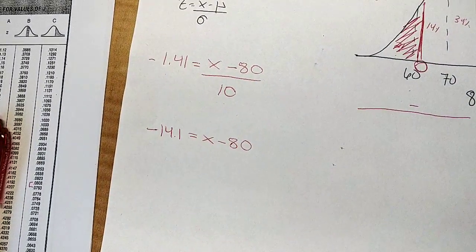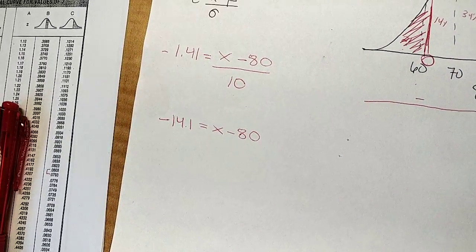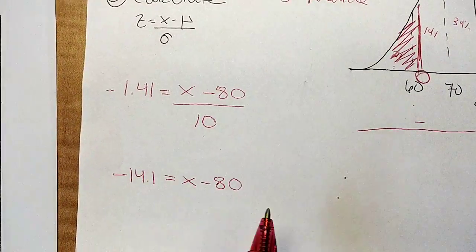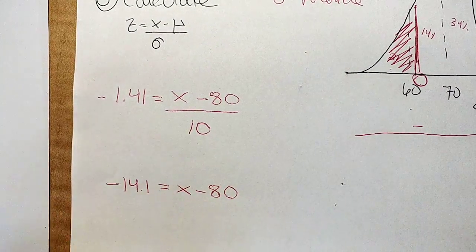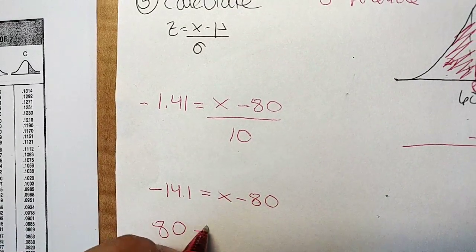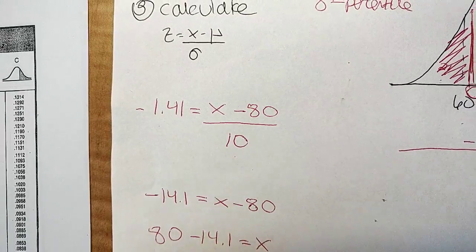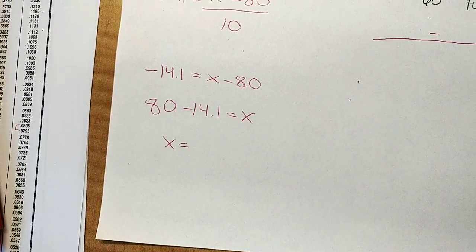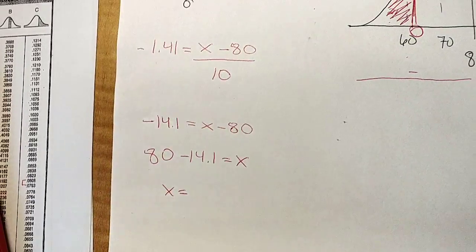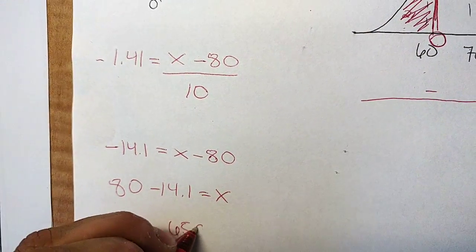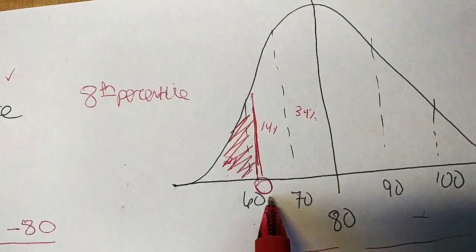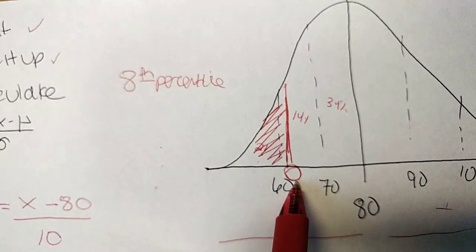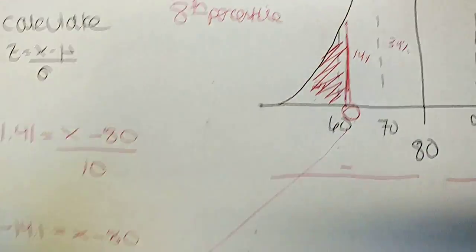Now, how do I get rid of that 80 that's on this side? I'm going to add it to both sides. So it's 80 minus 14.1 equals X, and X equals 65.9. Now, let me just see if that maps onto what I thought. Yeah, I said it was 60-something, so that's good.